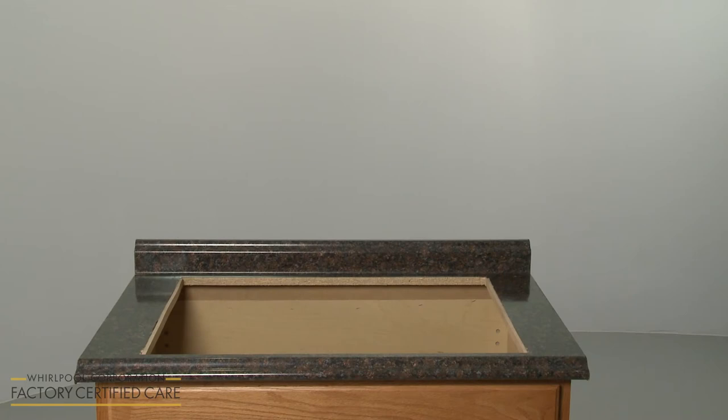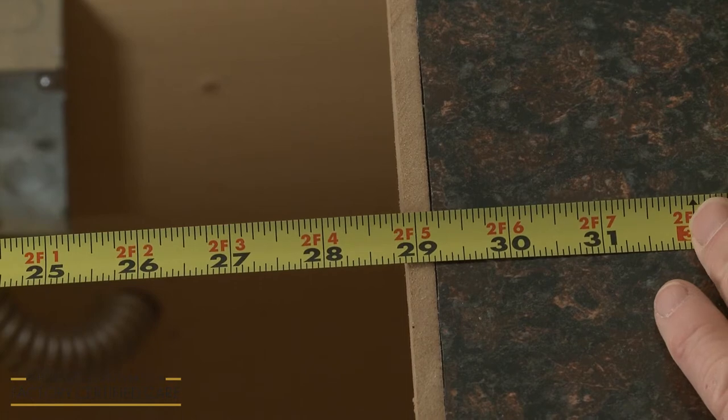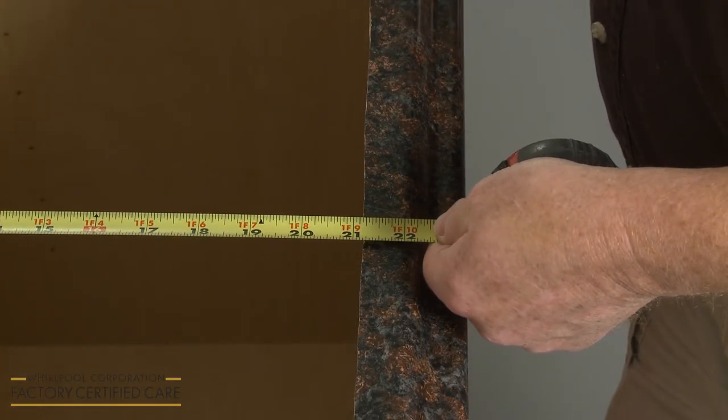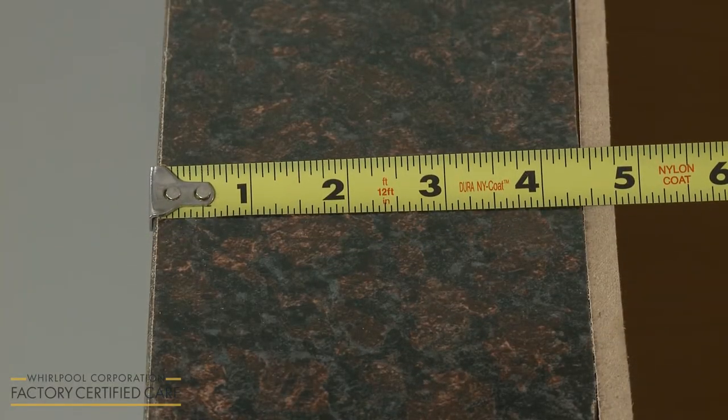For proper cooktop installation, the countertop opening should be 28 7/8 inches from side to side and 21 1/8 inches from front to back. There will need to be at least 2 1/2 inches of clearance on each side of the cooktop.